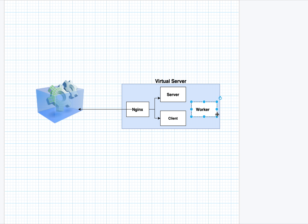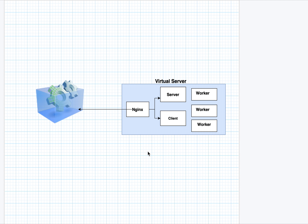Whatever processing the application receives is performed by the worker. When we talk about scaling this application, the desired scaling would be: we have nginx, server, and client responsible for sending requests to the worker, and the worker handles all the computation work. Ideally, we would want to scale only the worker, which is responsible for the computation.